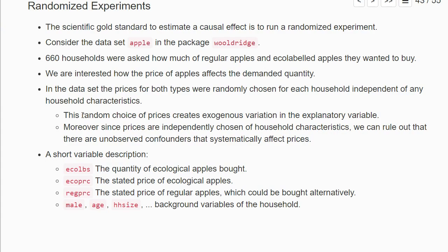Since we randomly picked different prices for different households, we generated our own source of exogenous variation with this experiment. That's what randomized experiments do: they randomize some treatment and thereby generate exogenous variation.